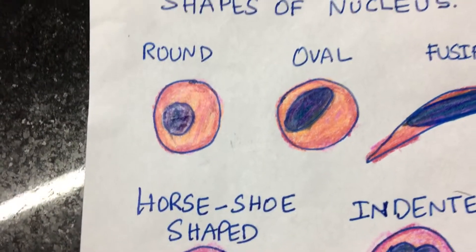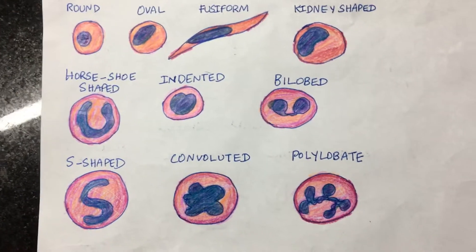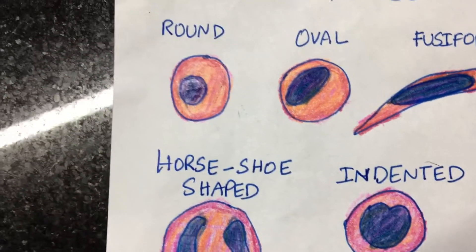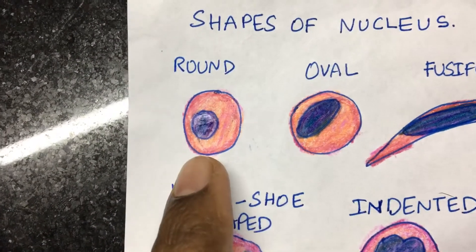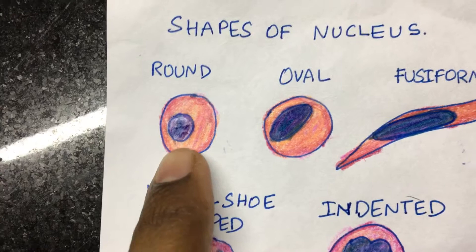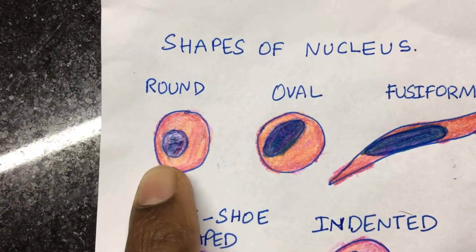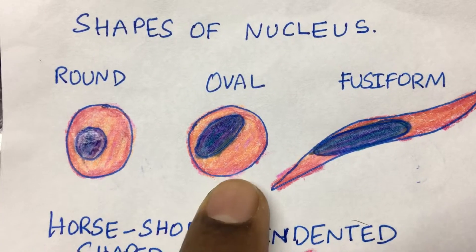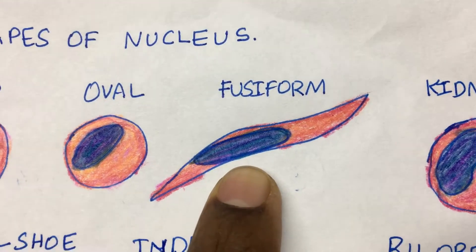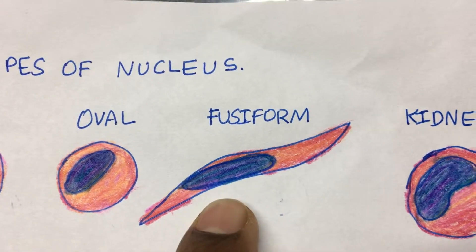In this video I am going to talk about different shapes of the nucleus that you will come across in cytology. The first shape of the nucleus is the round nucleus, which you can see in lymphocytes. The second one is the oval-shaped nucleus. Here you also have the fusiform nucleus, which is commonly seen in mesenchymal cells.